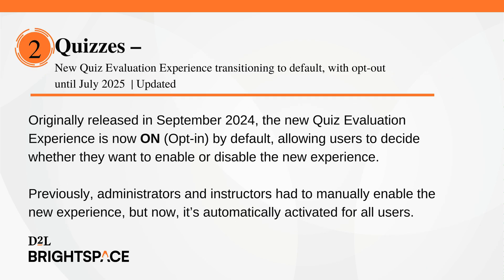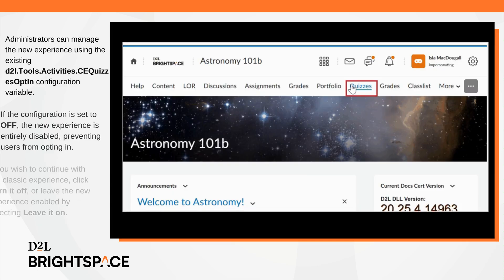Originally released in September 2024, the new Quiz Evaluation Experience is now enabled by default, allowing users to decide whether they want to disable the new experience. This transition aims to promote broader adoption while still allowing users to opt out until July 2025. Previously, administrators and instructors had to manually enable the new experience, but now it's automatically activated for all users.